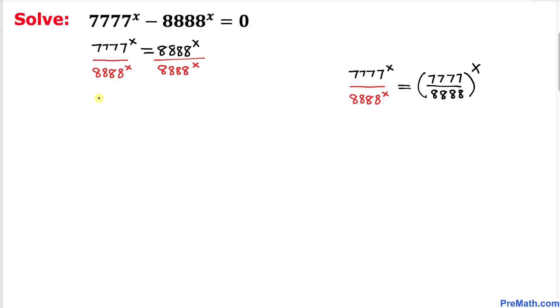Therefore, this left hand side fraction could be written as 7777 divided by 8888 power x equals to... and here we can see they just simply cancel each other out and reduce to 1.